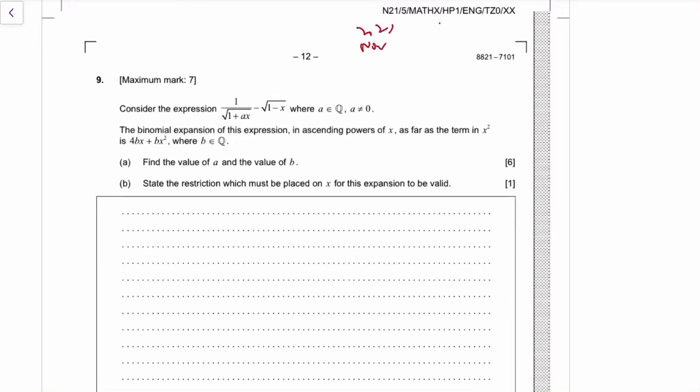2021 November paper 1 AHL question 9. We're supposed to do a binomial expansion, this is one of the new things in the new syllabus, a binomial expansion.